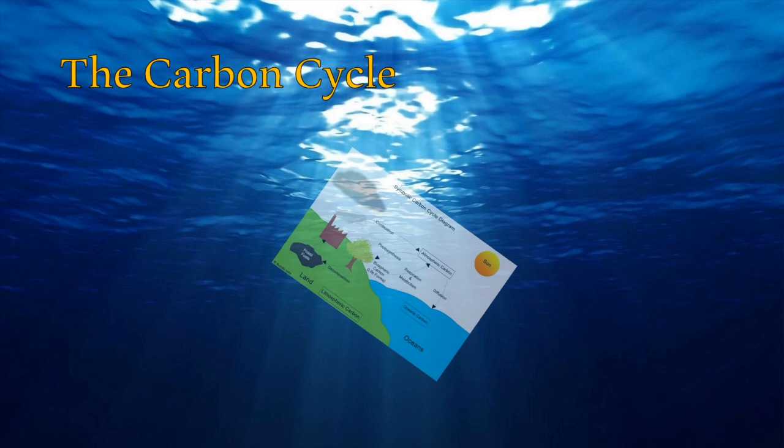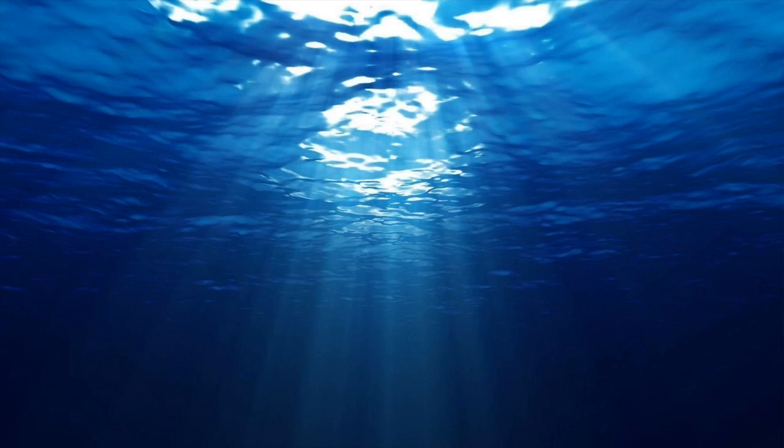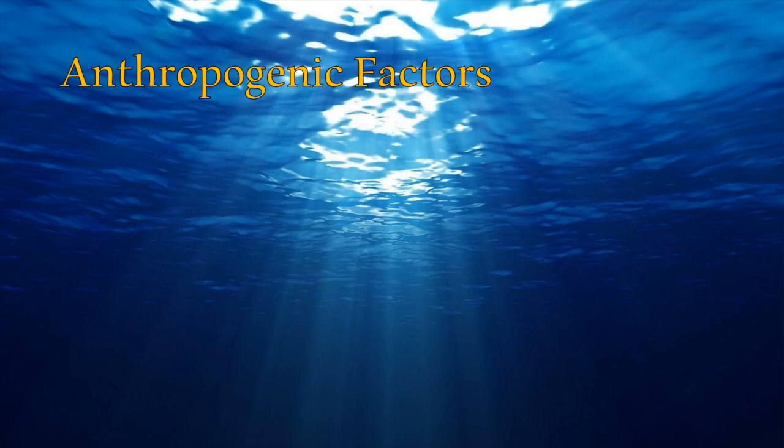Acidification is driven by the carbon cycle. Carbon is stored mostly in organic material, sediments, the atmosphere, and the oceans. The vast majority of carbon is stored in the Earth's crust underground. However, human activities are releasing carbon from storage into the atmosphere by burning fossil fuels, and the ocean is able to absorb this excess carbon dioxide from the air.